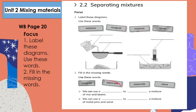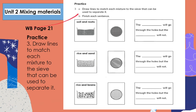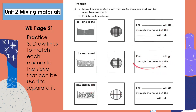Here you will label these diagrams using the words: mixture, magnet, mixtures, and sieve, and fill in the missing words using: magnet, separate, and sieve. In workbook page 21, practice is an application of what you have learned about separating mixtures. You will draw lines to match each mixture to the sieve that can be used to separate it, and finish each sentence.